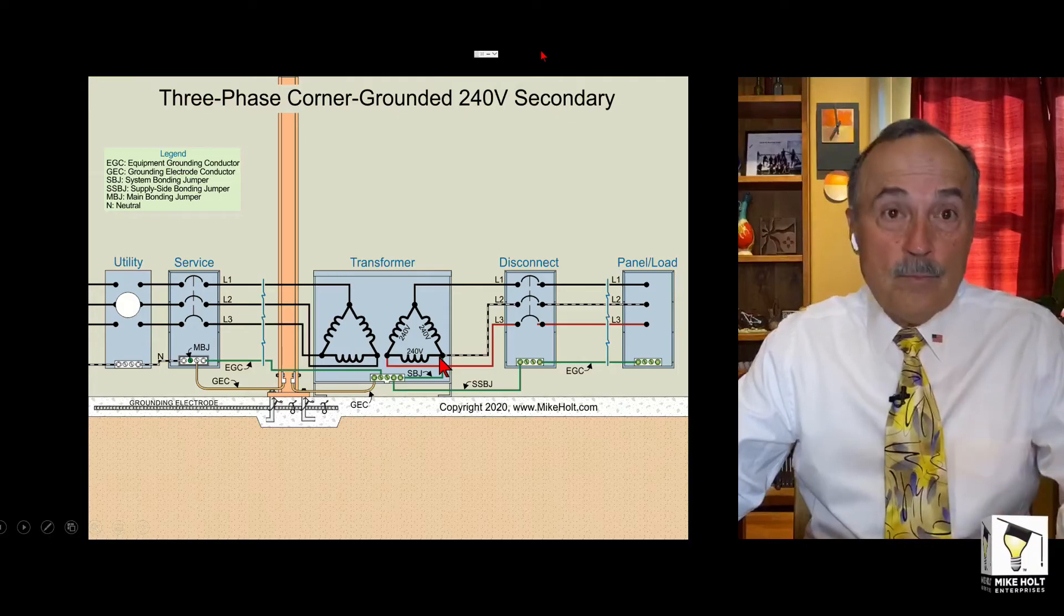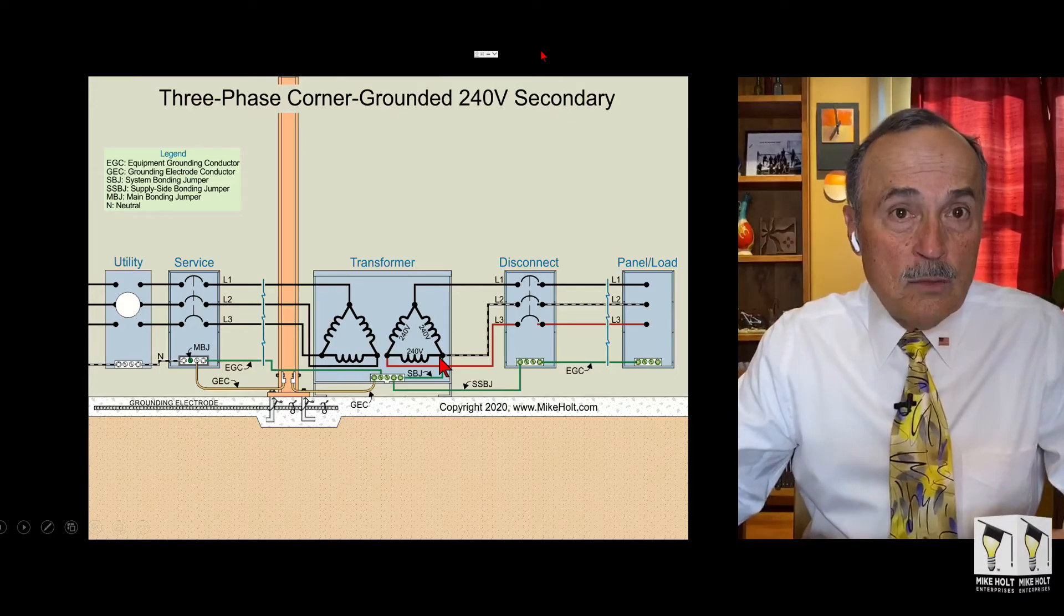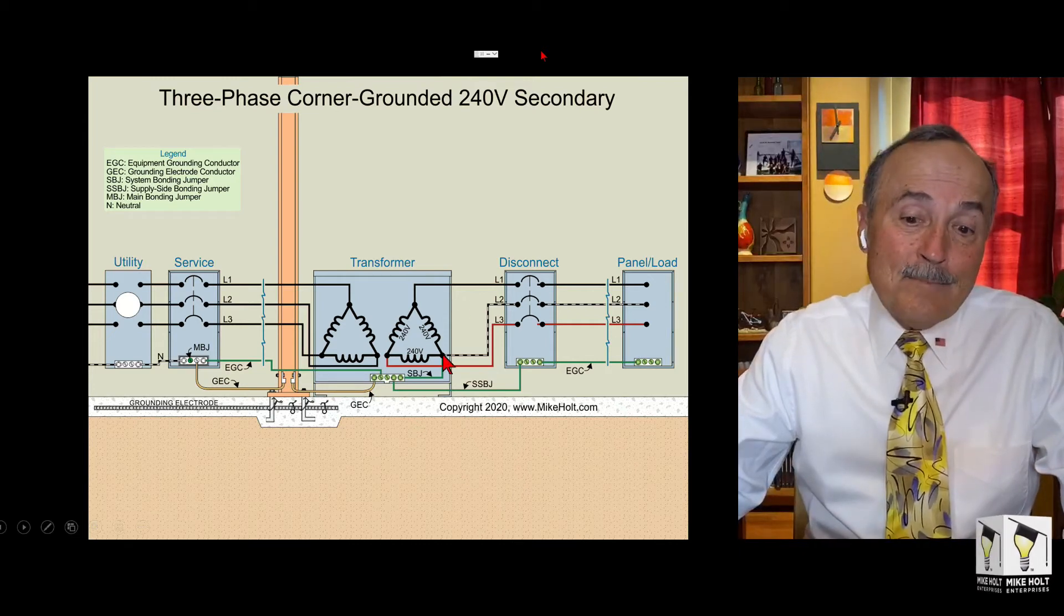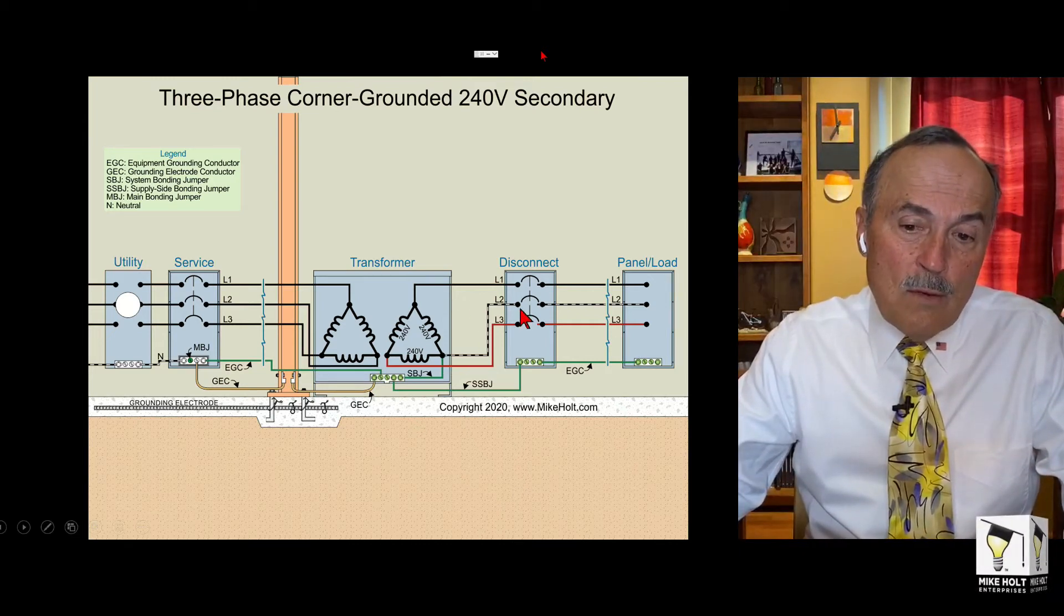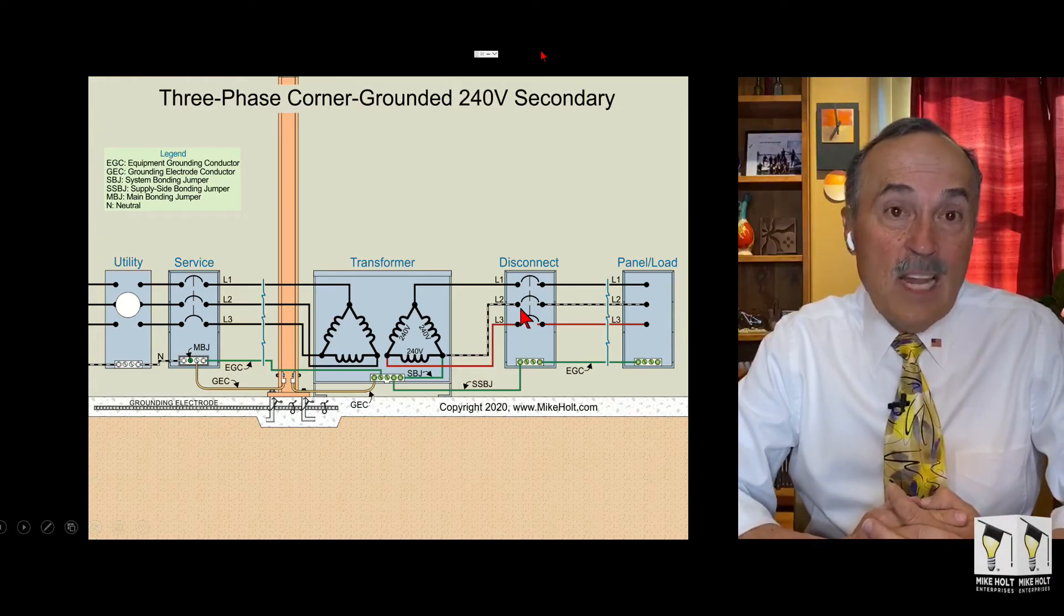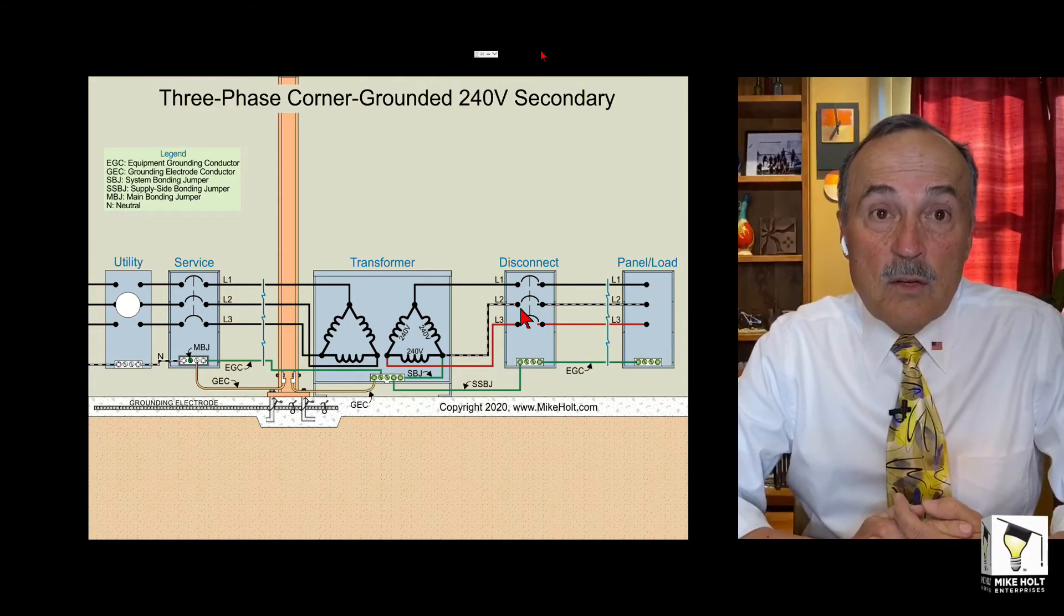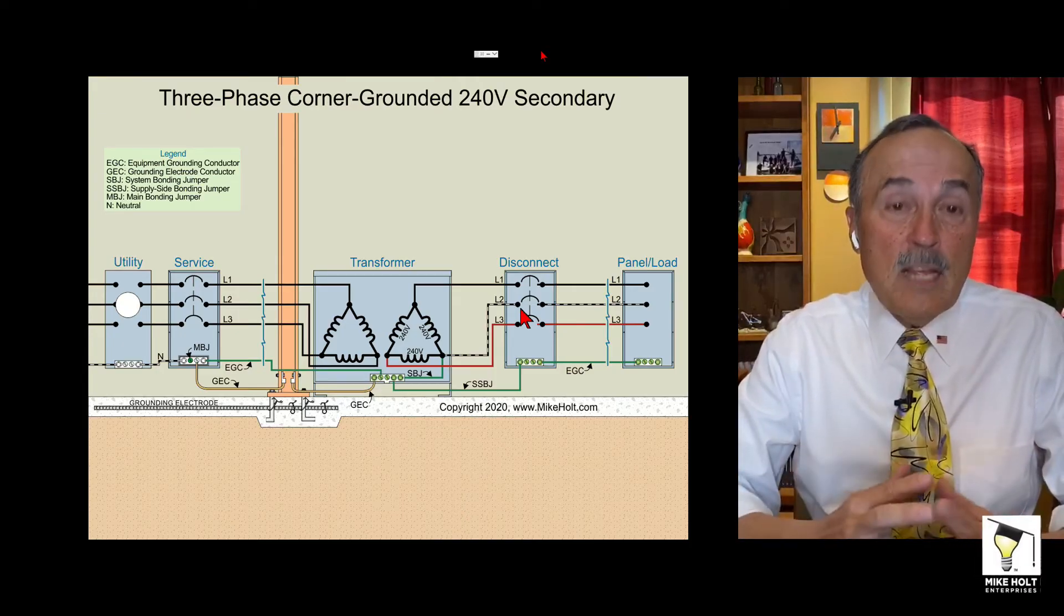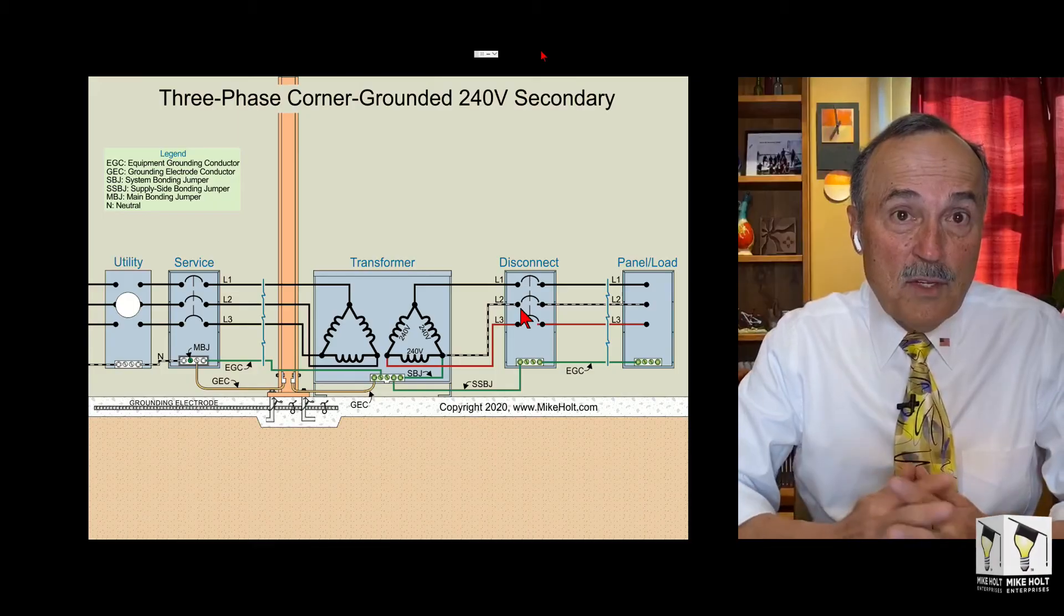We're corner grounding it because we want to change an ungrounded system to a corner grounded system to gain the advantages, and we're going to use a white wire. But the question was, well Mike, you kind of picked up the line two wire - could you make white line one or line three? I might get some feedback from somebody else. I've never been asked that question in my entire life of 50 years of training and teaching.